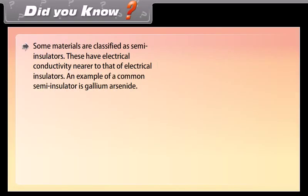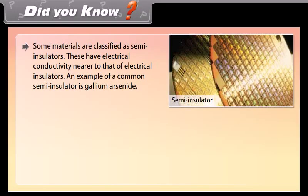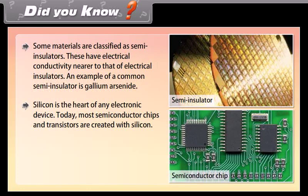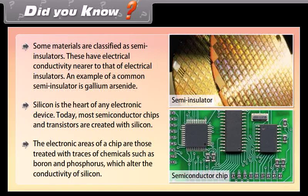Did you know? Some materials are classified as semi-insulators, having electrical conductivity nearer to that of electrical insulators. An example of a common semi-insulator is gallium arsenide. Silicon is the heart of any electronic device. Today, most semiconductor chips and transistors are created with silicon. The electronic areas of a chip are those treated with traces of chemicals such as boron and phosphorus, which alter the conductivity of silicon.